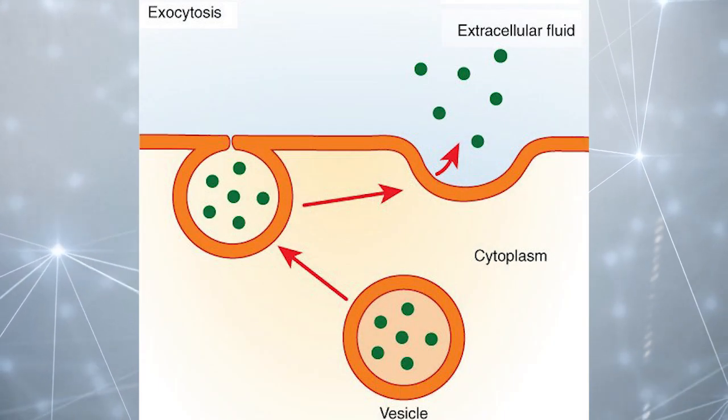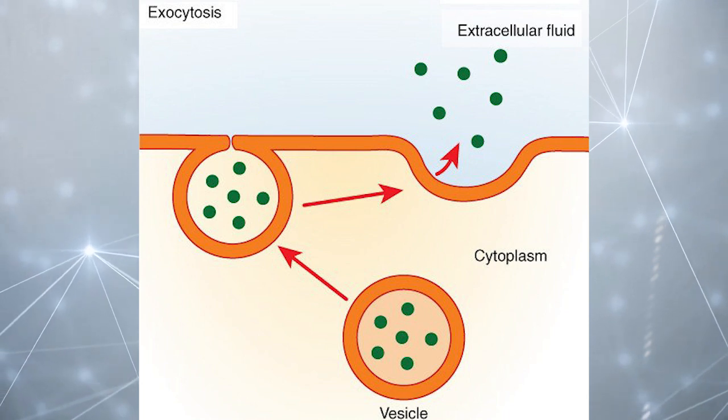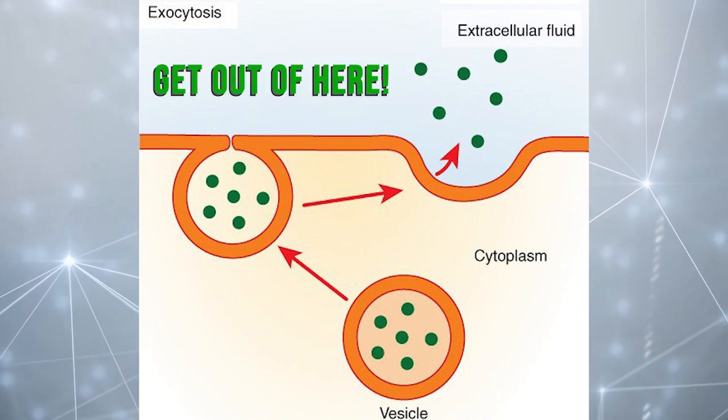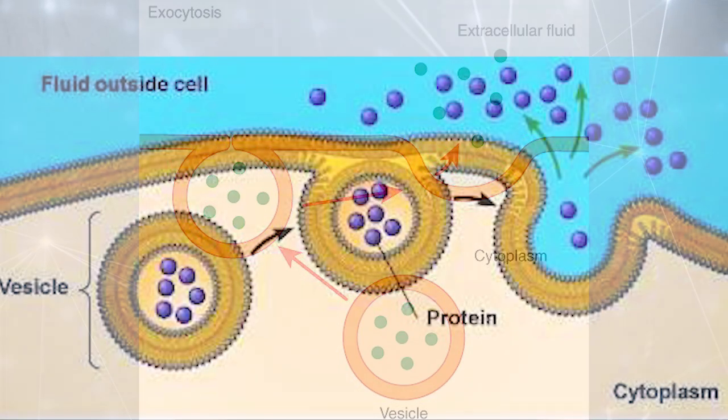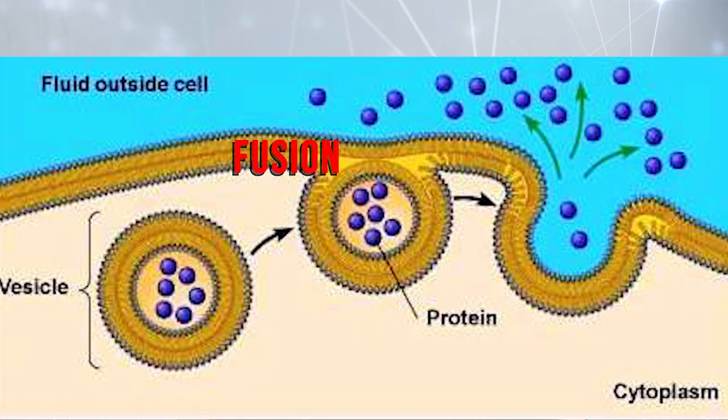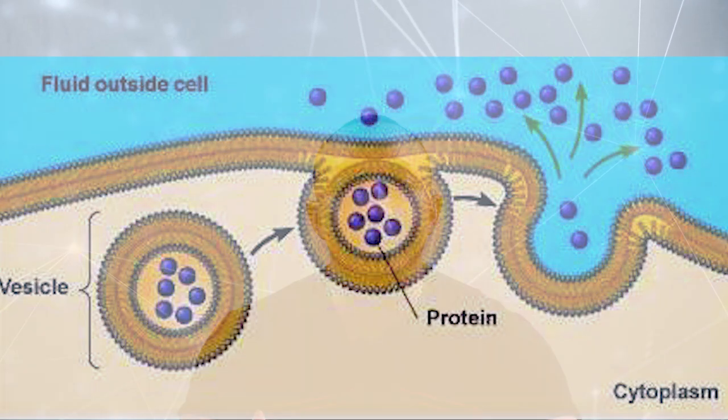Exocytosis is a type of active transport where materials and wastes are packaged into transport proteins known as vesicles and released from the cell through the cytoplasm to the cell membrane. The vesicles actually fuse with the cell membrane and release their contents outside of the cell.